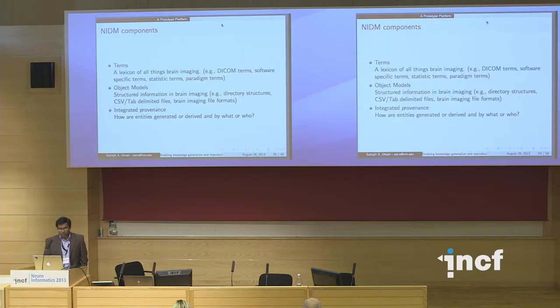I'm going to talk about a prototype platform we've been developing with a standardized data model, provenance tracking, decentralized content creation, storage, and federated query. The standardized data model is based on PROV-DM and derives from the provenance ontology. We encode information in a structured manner using a consistent vocabulary, and we're trying to build up metadata standards via domain-specific object models. We've encoded DICOM terms, software-specific terms, statistic terms, and paradigm terms. We can also take CSV and tab-delimited files and encode that, and extract metadata from brain imaging file formats to represent it in a more standard manner.